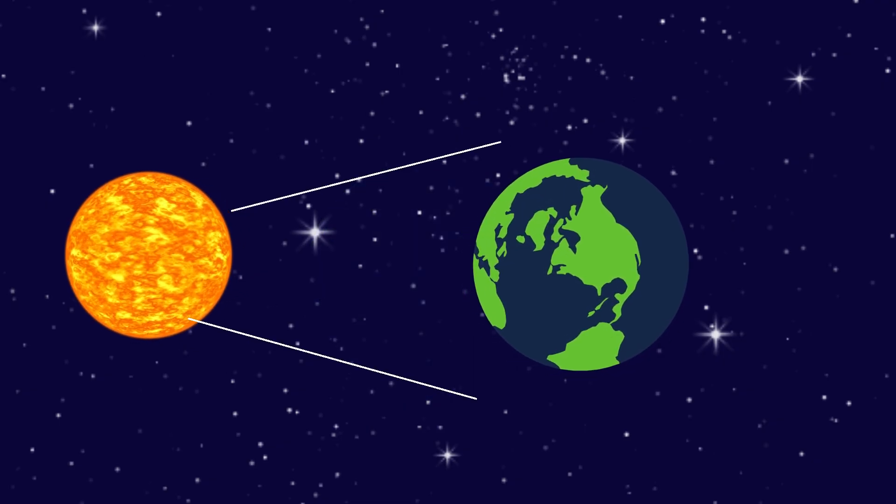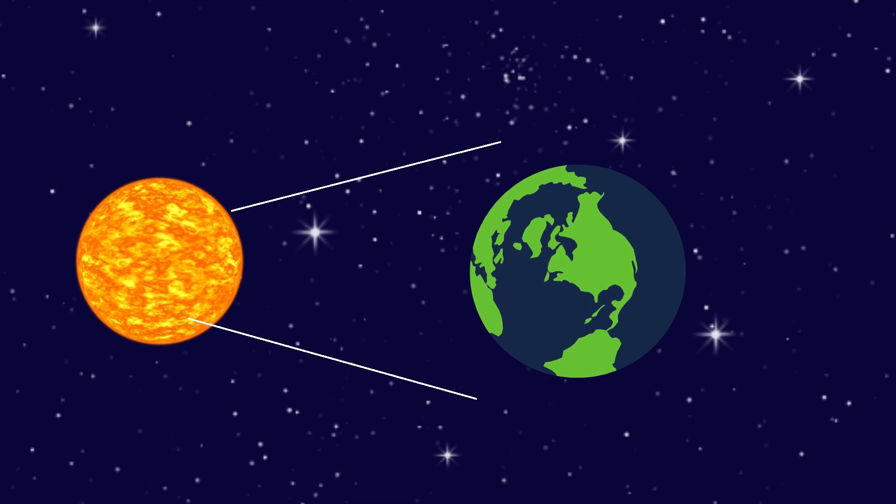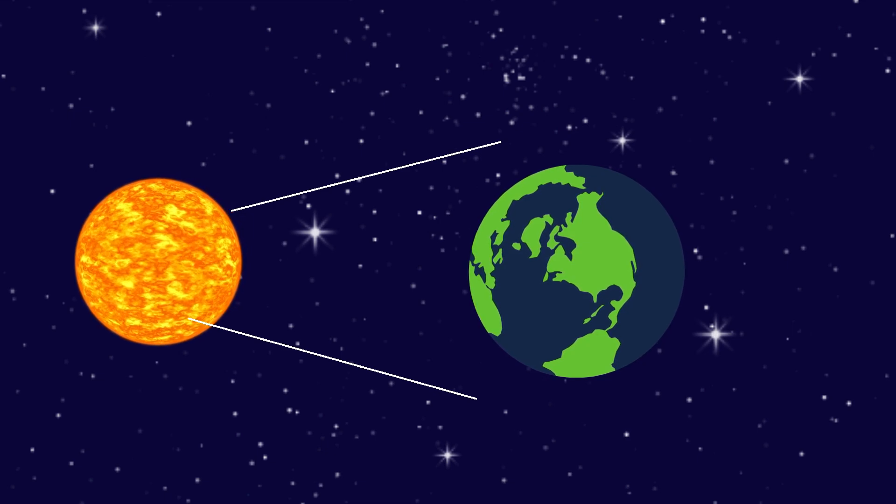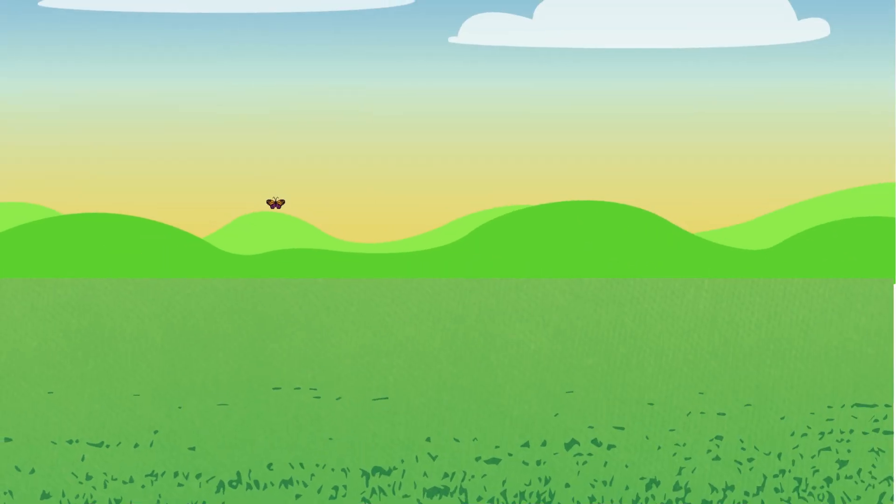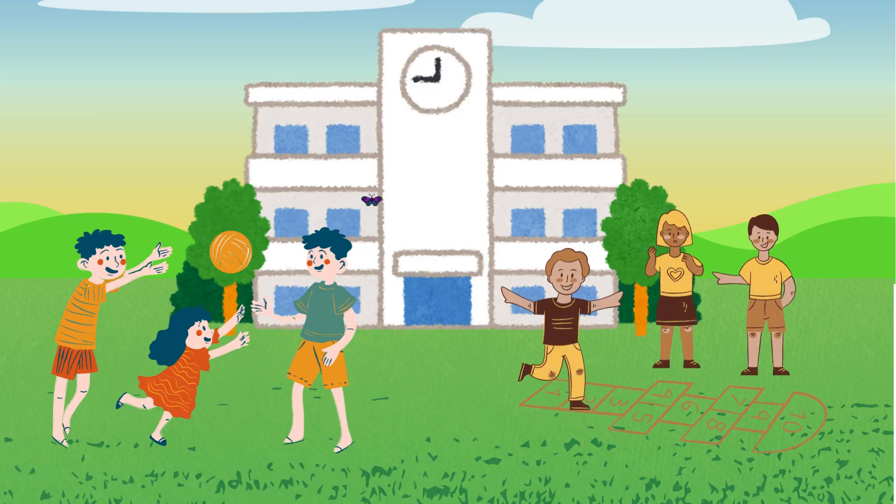When your part of the Earth faces the sun, it is daytime. The sun shines and everything gets light and warm. We can go to school, play outside, and have fun in the sun.